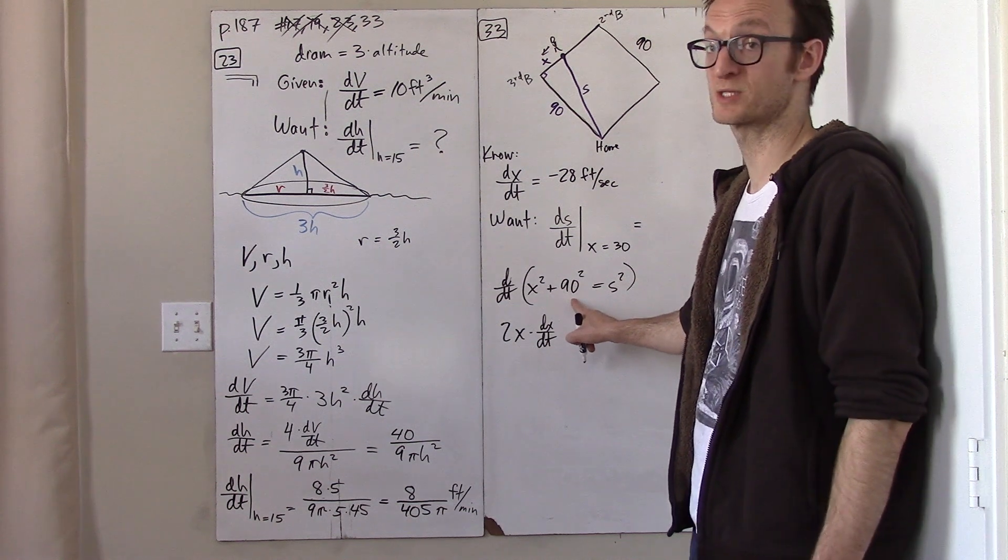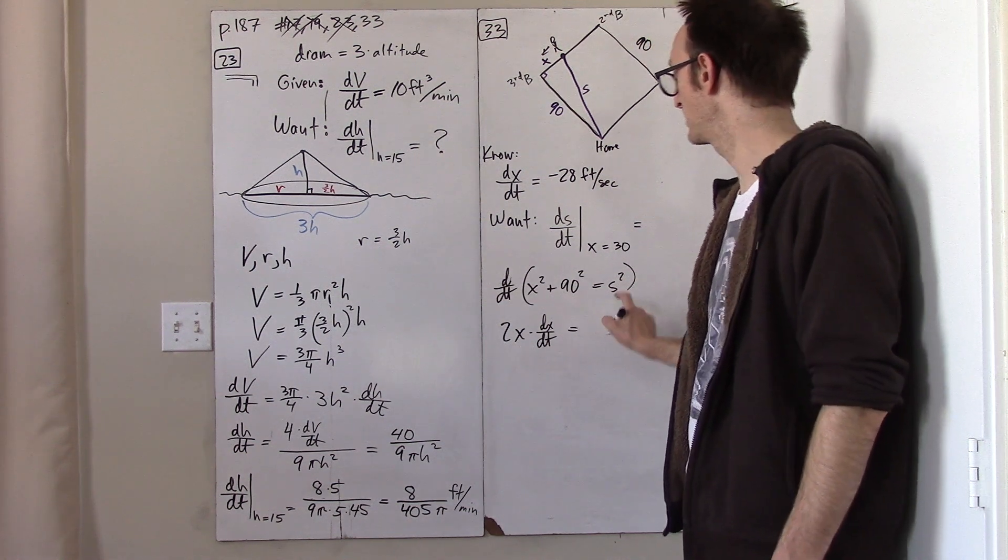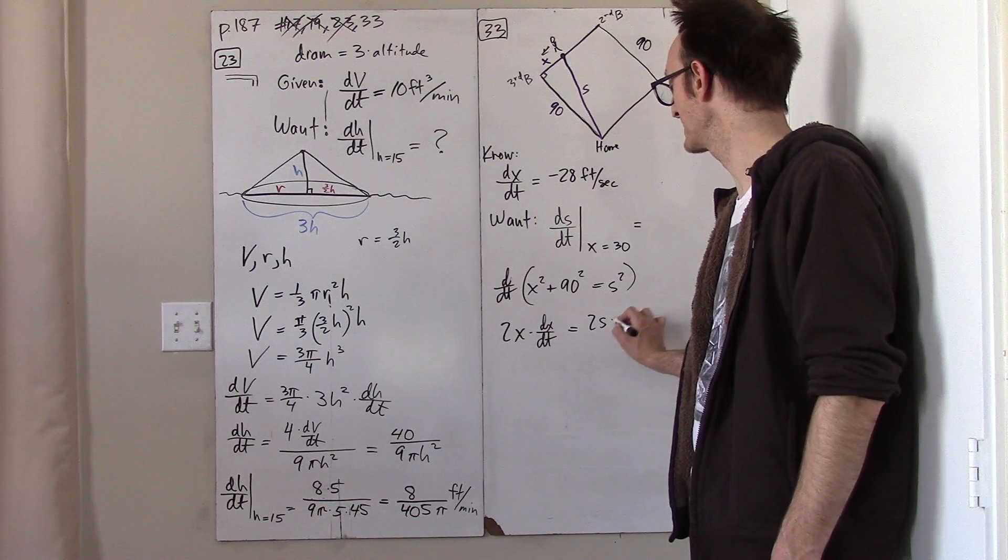The derivative of something squared is two times something times the derivative of the something. The derivative of 90 squared is just zero. And the derivative of s squared is two s ds dt.